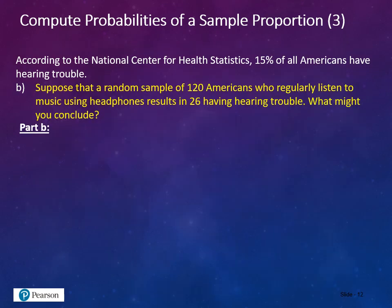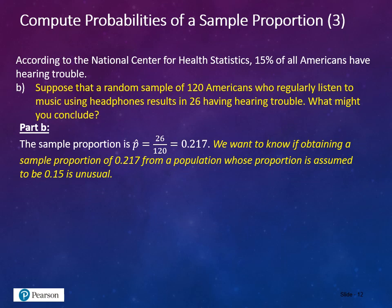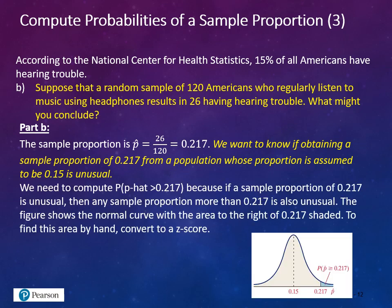For Part B: suppose a random sample of 120 Americans who regularly listen to music using headphones results in 26 having hearing trouble. What might you conclude? The sample proportion is 26 over 120, which equals 0.217. We want to know if obtaining a sample proportion of 0.217 from a population whose proportion is assumed to be 0.15 is unusual. We need to compute the probability of p-hat being greater than 0.217.